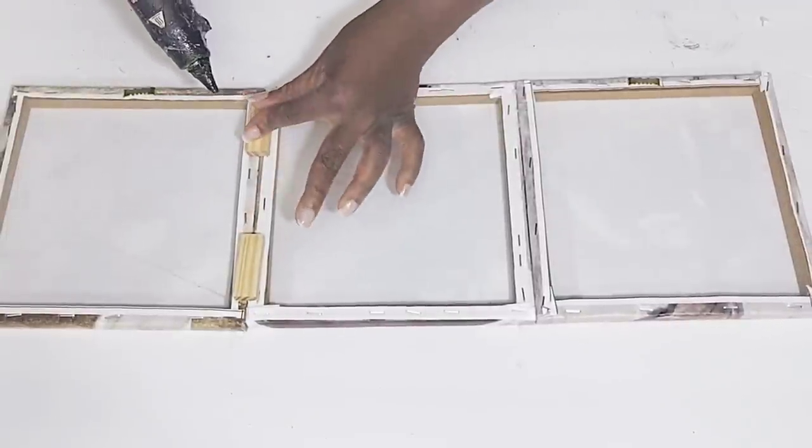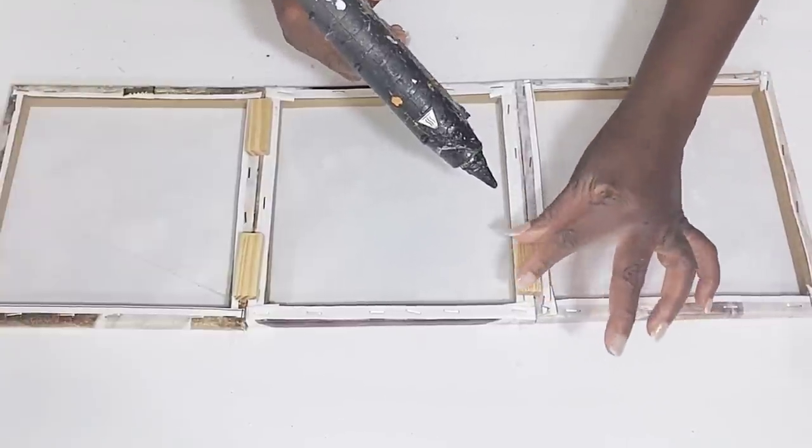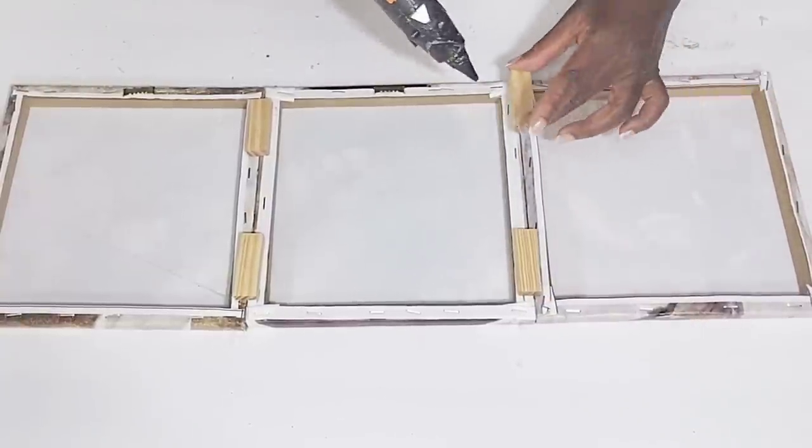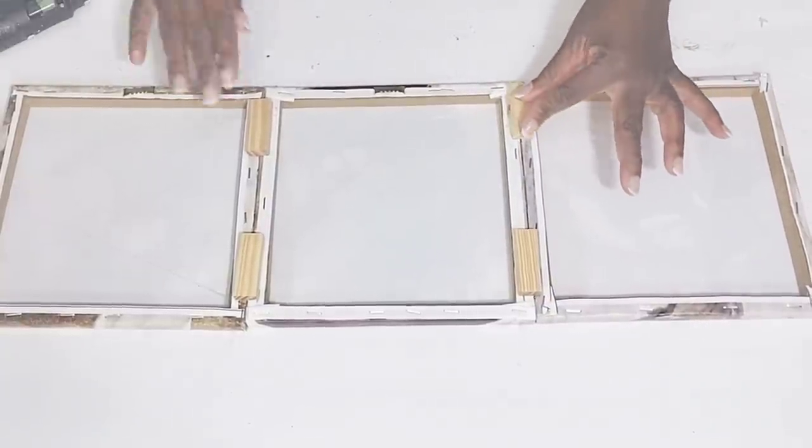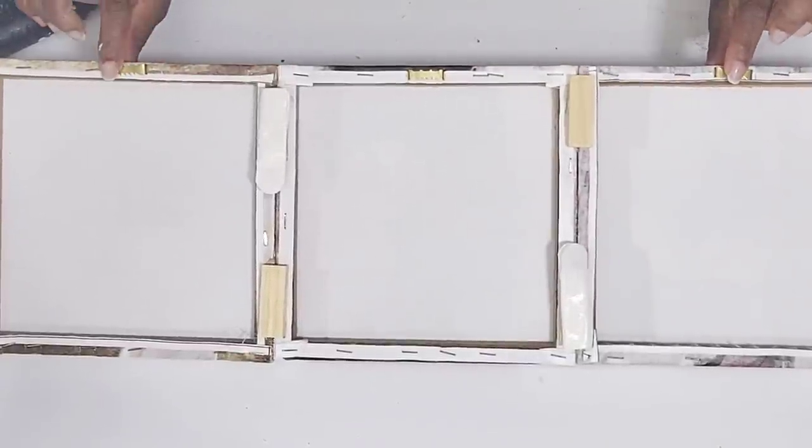Now, you can take some popsicle sticks to add along the frames for extra security. I am using these tumbling blocks because I am going to be adding some command strips. And I don't want it flush against the wall.